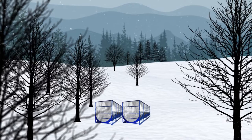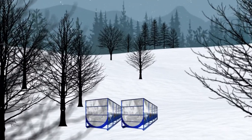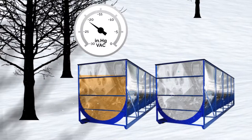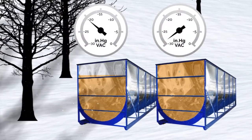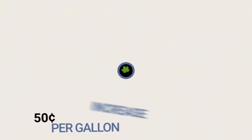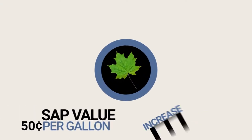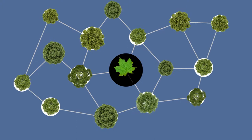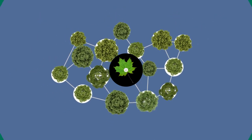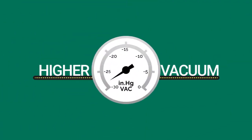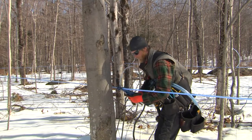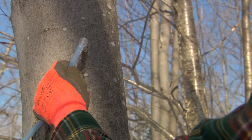To put that into perspective, if a 10-inch tree produces 15 gallons of sap with vacuum levels at 20 inches, it would produce about 20 gallons of sap at 27 inches of vacuum. At a sap value of 50 cents per gallon, that's an increase of $2.50 per tree. Multiply that by the number of trees in your operation, and the benefits of achieving and maintaining higher vacuum levels are obvious. This also highlights the importance of rapidly detecting and fixing leaks — even minor leaks can have major impacts.